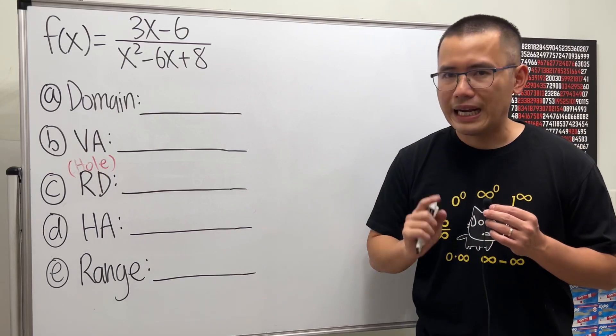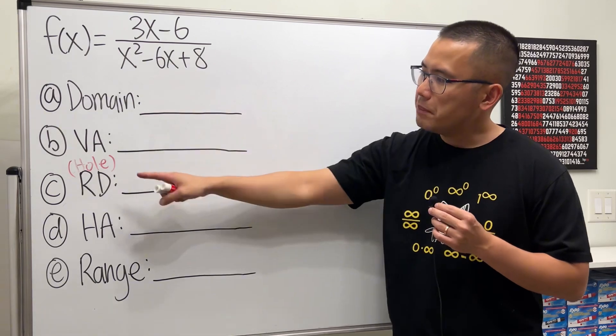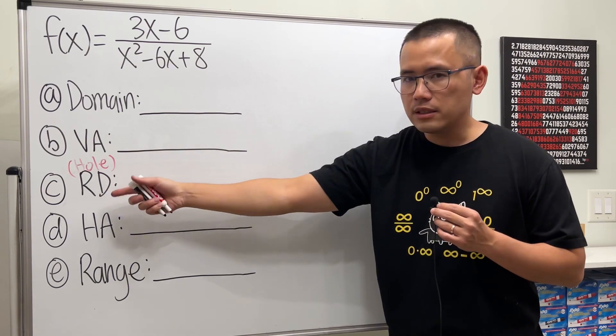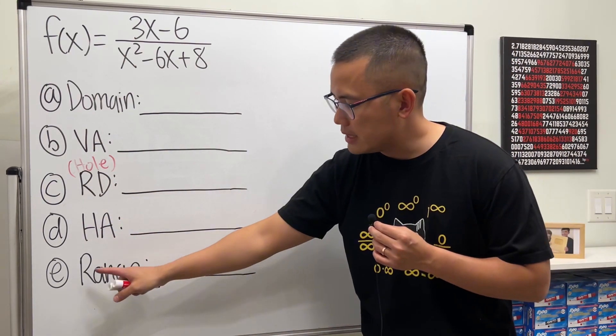These are the five things that you have to know how to find when we are working with a rational function: domain, vertical asymptote, removable discontinuity (that's just like a hole on the graph), horizontal asymptote, and lastly, the range.